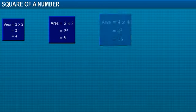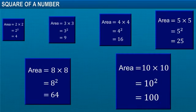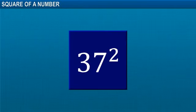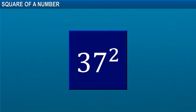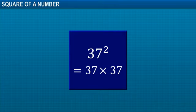It is quite easy to find the squares of small numbers, but finding the squares of large numbers is not easy. For example, to find the square of 37, you have to multiply 37 by 37.